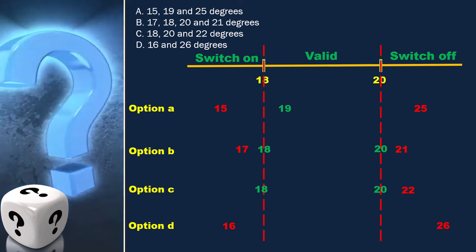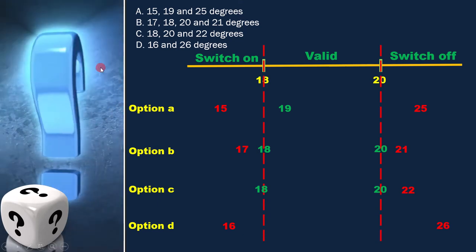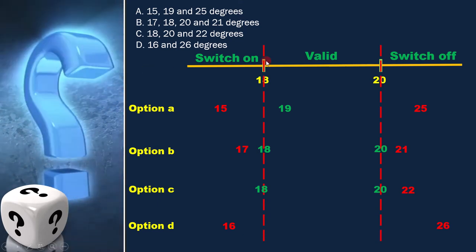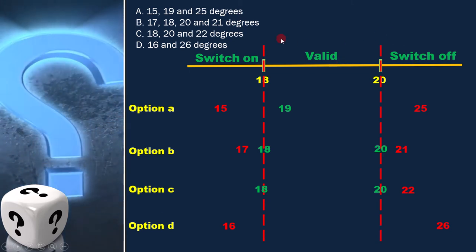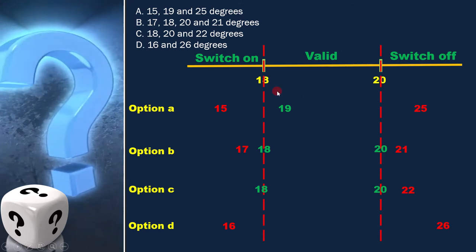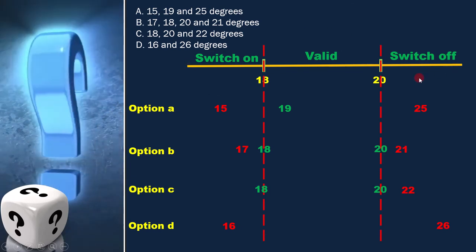As per the question, we have to cover all valid equivalence partitions. Here, all the three classes are valid equivalence class because in all the classes we perform some function.